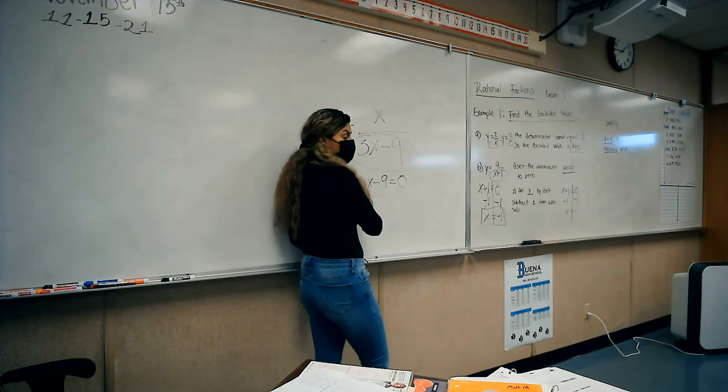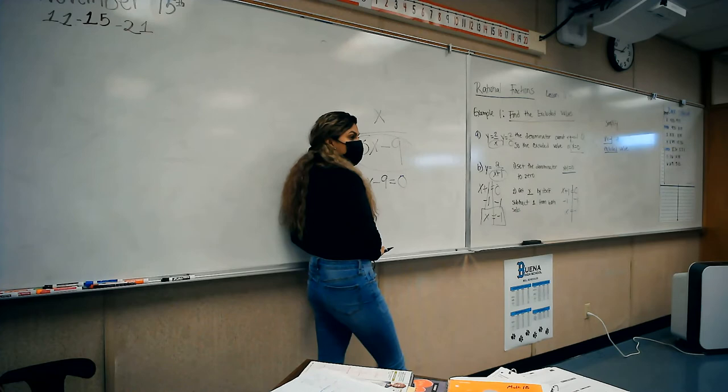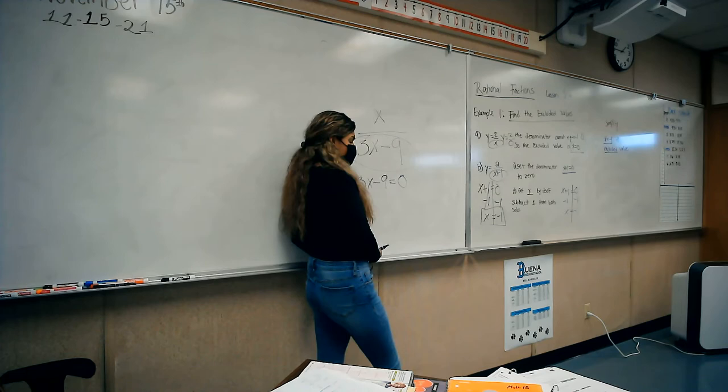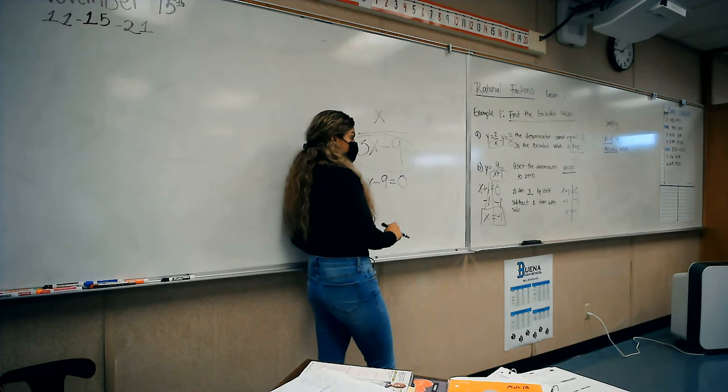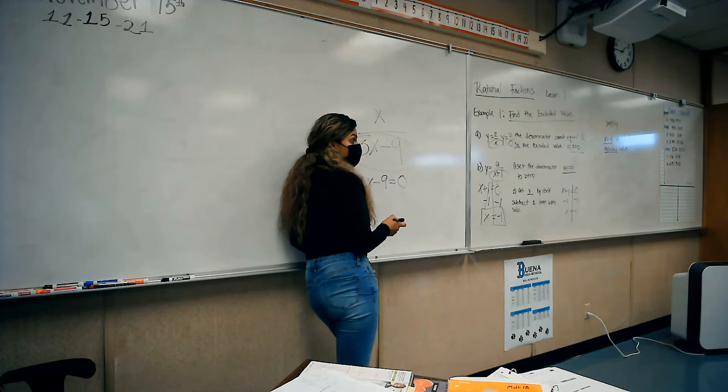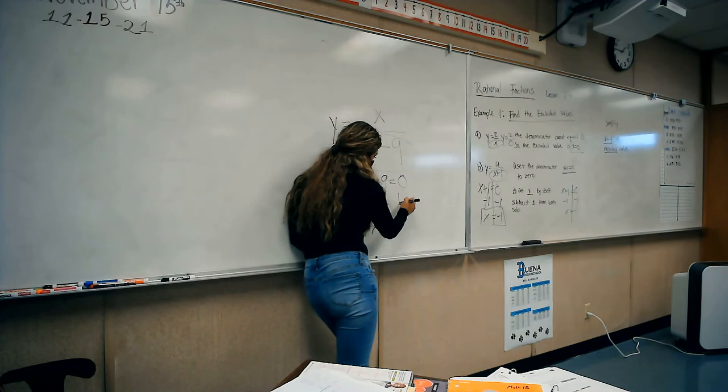Now this is where we're going to find the value of x, correct? So what do I need to do? What's the first thing I need to do? We have to get x by itself, right? There's a negative 9, so I need to do the opposite. Positive 9. So we're going to add 9. Good job.